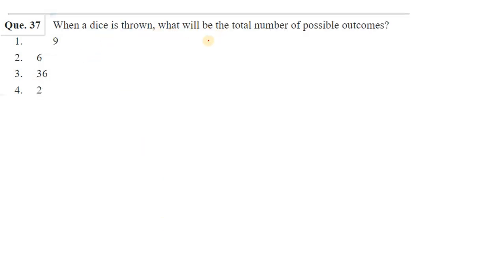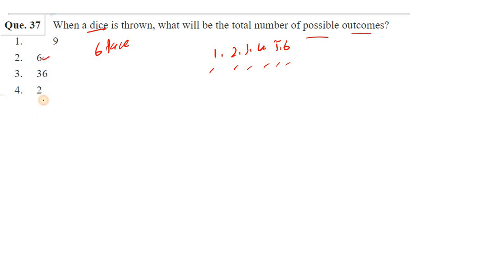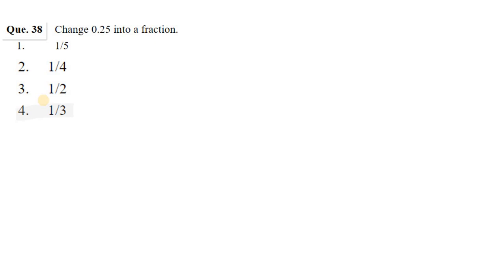When a dice is thrown, what will be the total number of possible outcomes? A dice has 6 faces, numbered 1, 2, 3, 4, 5, 6. So when one die is thrown, the total number of possible outcomes is 6.